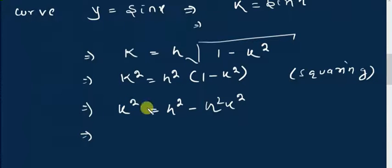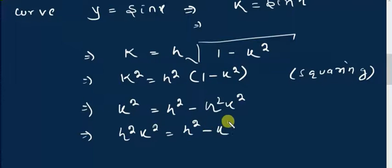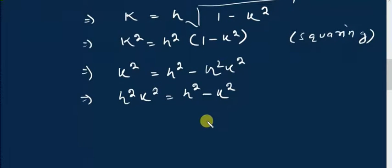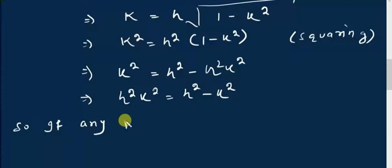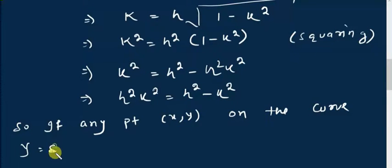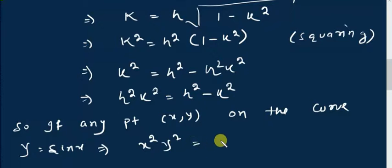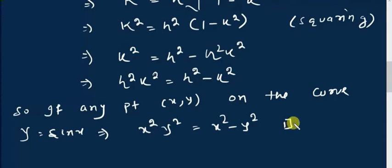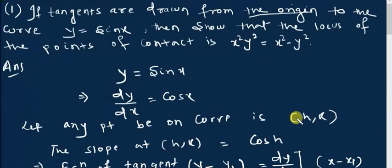Taking h²k² to the left side and k² to the right side gives: k² + h²k² = h², which simplifies to k²(1 + h²)... actually rearranging: k² = h² - h²k². Now replacing the point (h, k) with any general point (x, y) on the curve, this equation becomes x²y² = x² - y², which is our required proof. Practice this type of question to achieve good results in your exam.